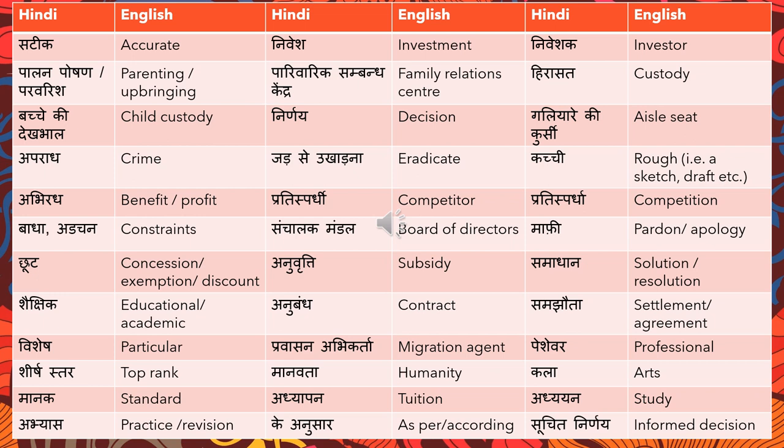'Galiare ki kursi' means aisle seat — as in a flight. If you want to say 'I want the aisle seat,' in Hindi you say 'Mujhe Galiare ki kursi chahiye.' 'Aparadh' means crime. 'Jad se ukhana' means to eradicate. 'Kachi' means rough — for example, can you make a rough sketch? You would use the word 'kachi.'